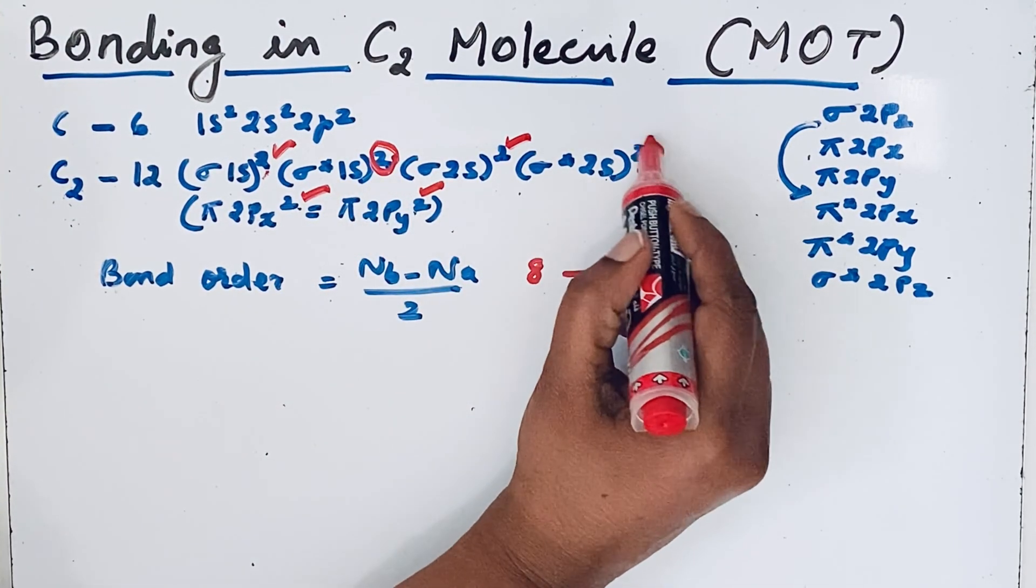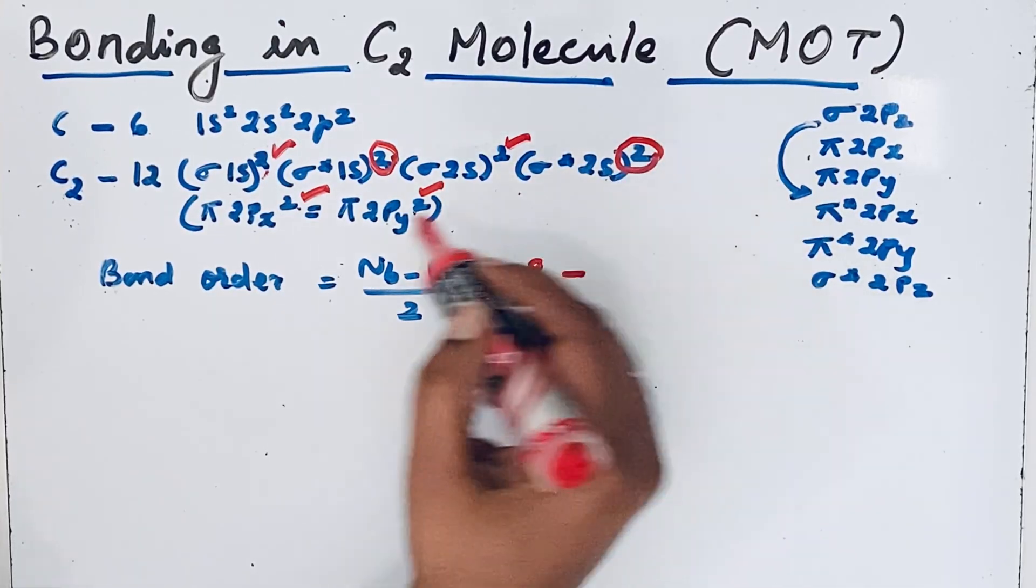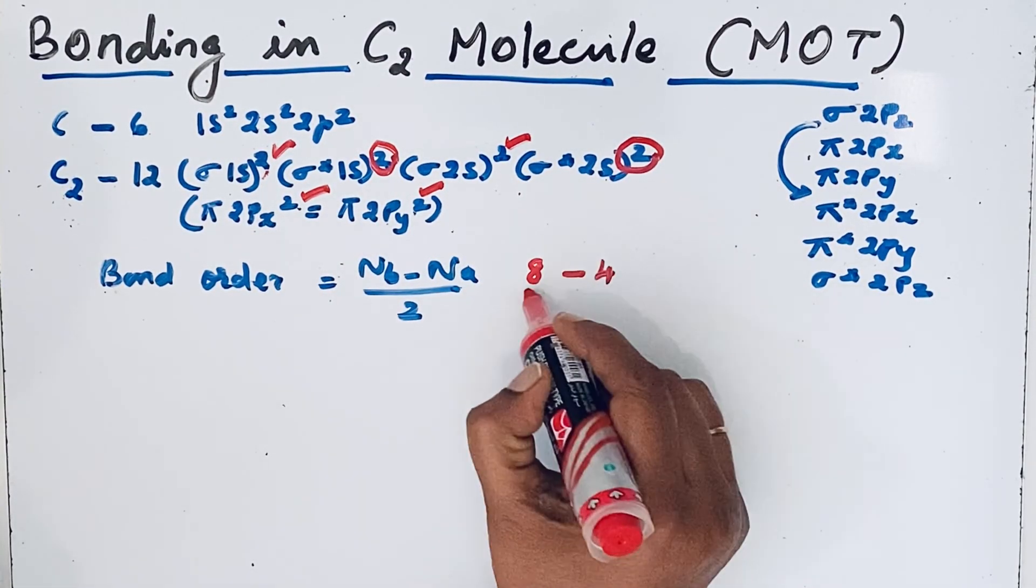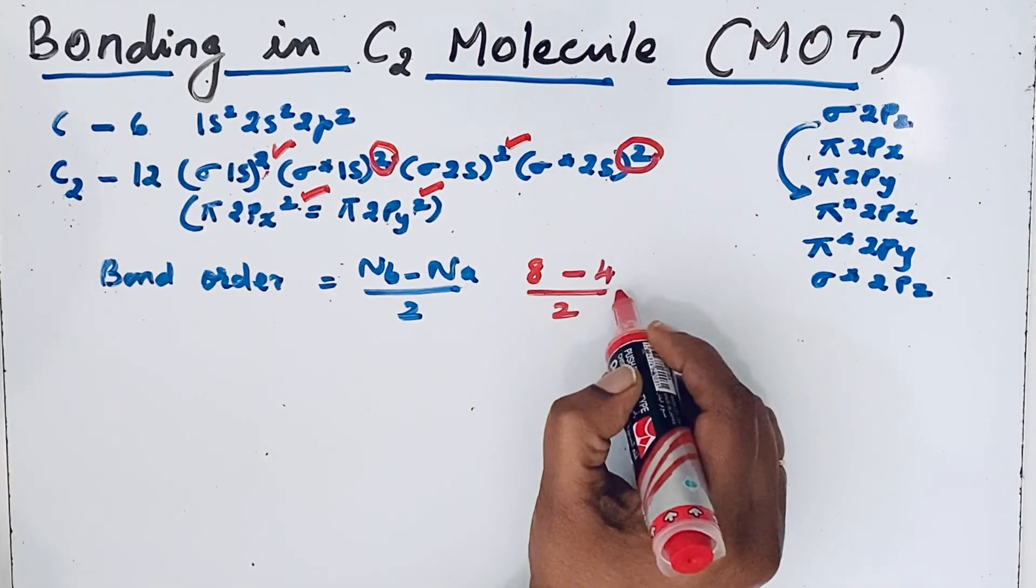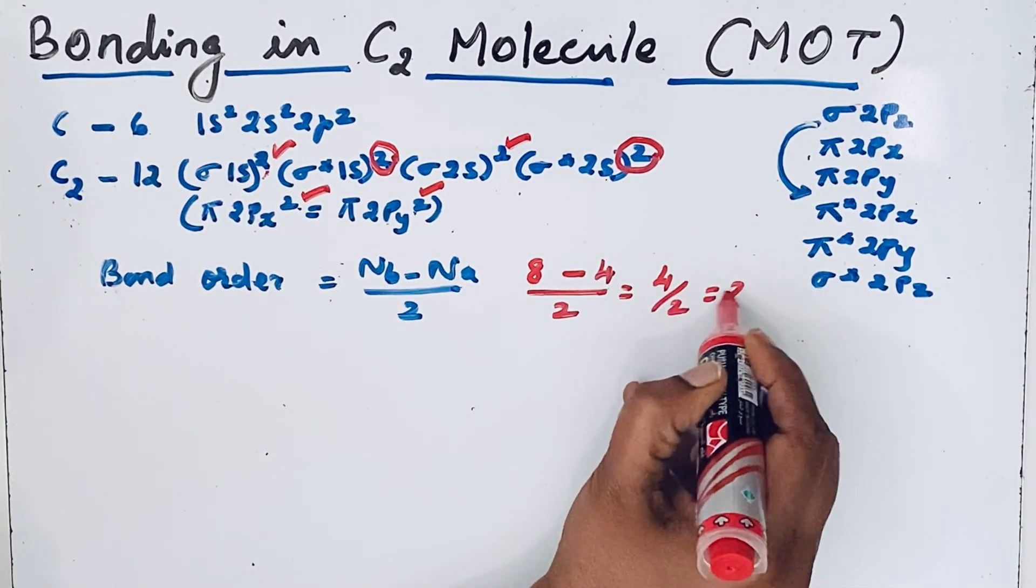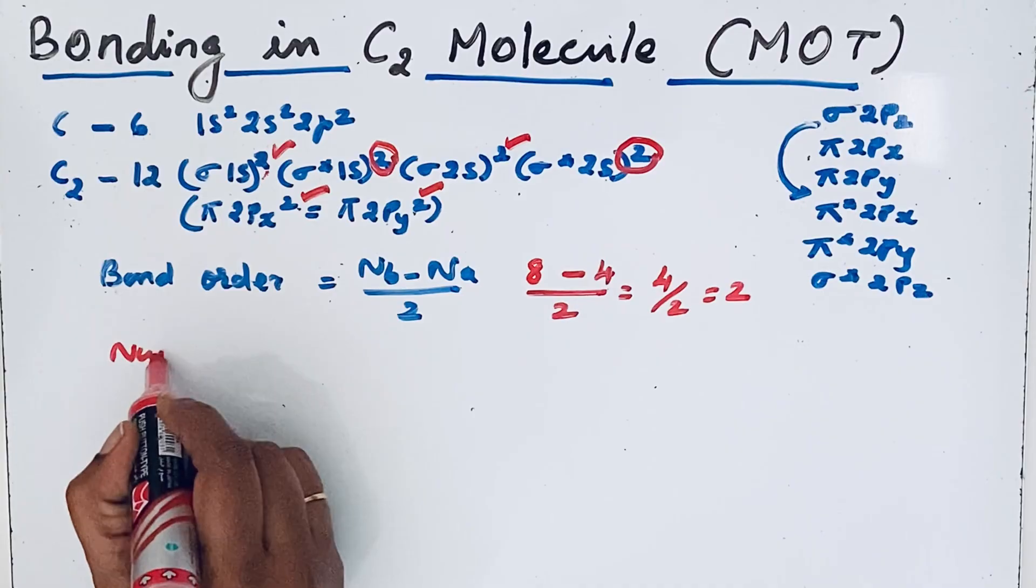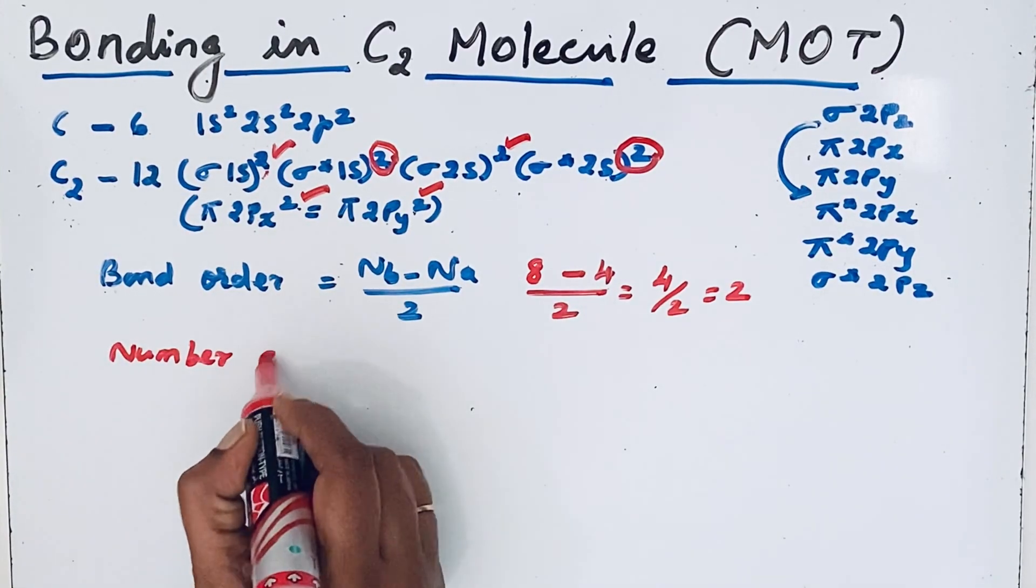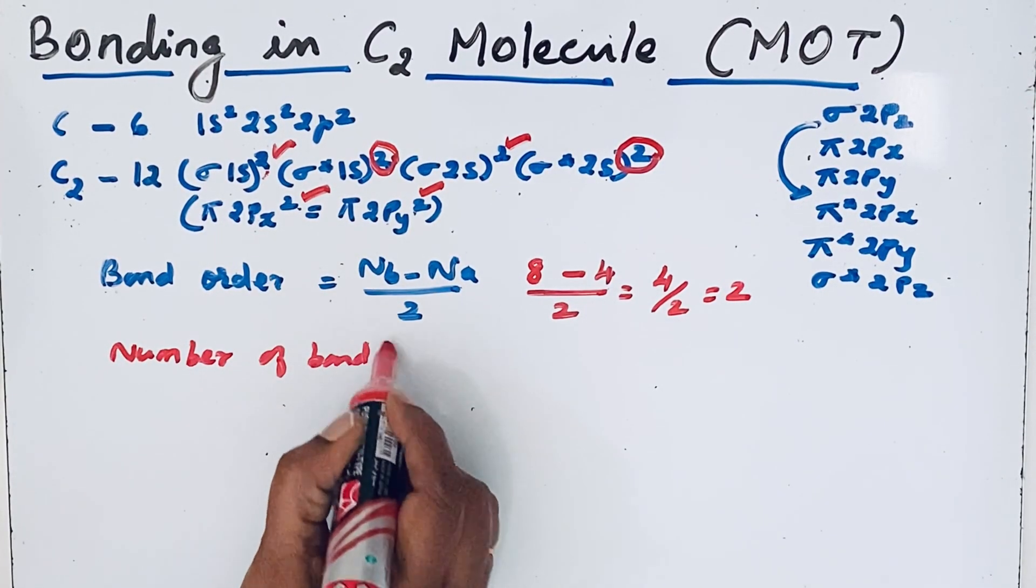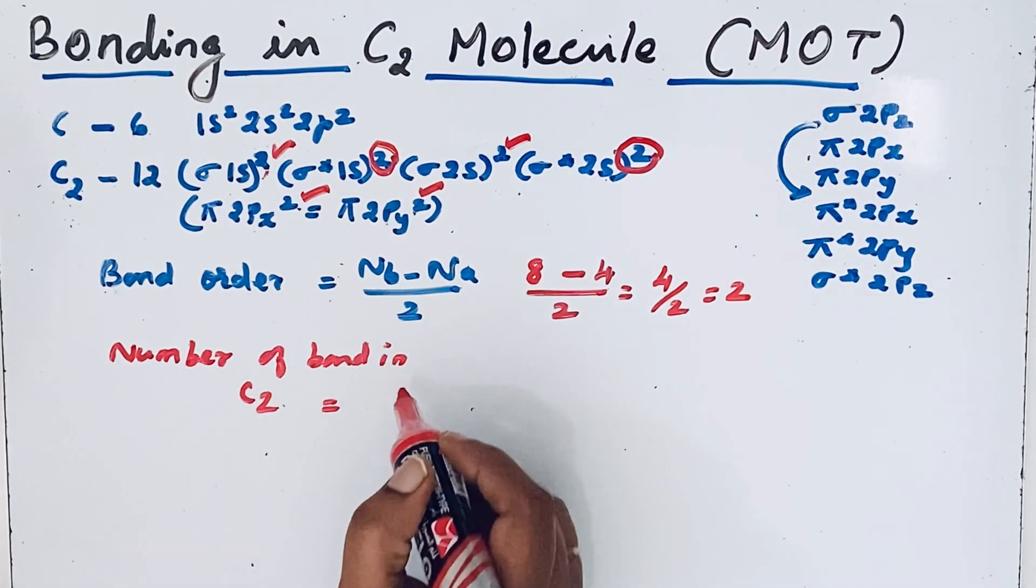Here 2 electrons, then here 2 electrons, 2 plus 2 equals 4. So 8 minus 4 by 2 equals 2. The number of bonds in C2 is equal to 2.